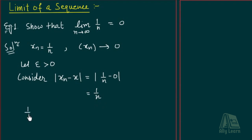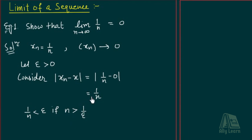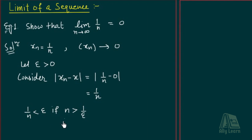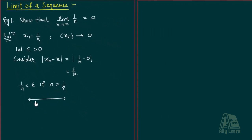So, 1/n is less than epsilon if n is greater than 1/epsilon. Yeh kiya implies karayanga? Agnes, divide kar day epsilon sa, aur n ko idher laga jayang — that means n greater than 1/epsilon. Now hamne n kya se bada liya? Ek natural number se. Ab dekhte hain: maalo, hamare paas real line hai — yeh hai 1/epsilon. Ab isse bada ek natural number hoga — let k be the natural number greater than 1/epsilon.